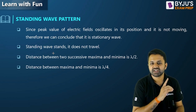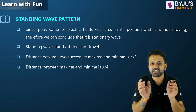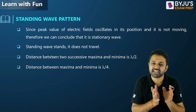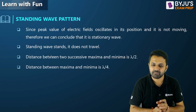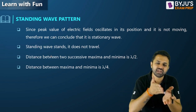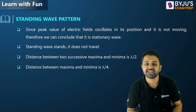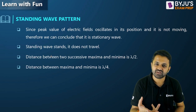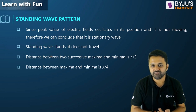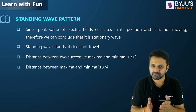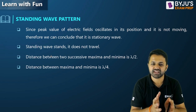Standing wave does not travel — it stands, which is why it is called a standing wave. The distance between two successive maxima (or minima) in a standing wave is λ/2, and the distance between a maximum and a minimum is λ/4. We also calculate the standing wave ratio (SWR), which is the maximum electric field divided by the minimum electric field.